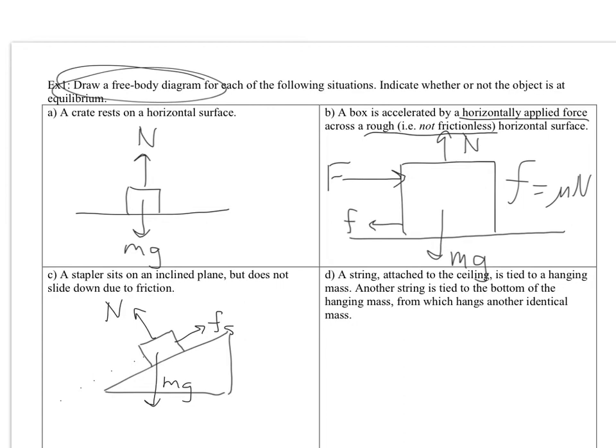Alright, last part here, part D. It says we've got a string attached to the ceiling, tied to a hanging mass. Alright, and then, oh my gosh, there's another one tied to that. Well, here's the ceiling. Here's the first string. The first object, and then... Okay, there we are. Alright, now if you're drawing all the forces, probably we should call these things like M1 and M2. I'm going to call the bottom one M1. Oh, that's a one, there we go. And then the top one's going to be M2.